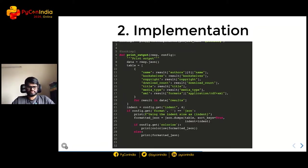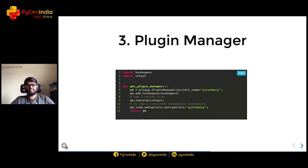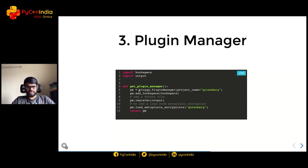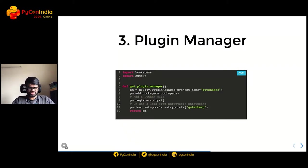Third is the plugin manager. The plugin manager takes care of registering plugins and creating instances for hooks to be called later. To create a plugin manager, first create an instance with the same project name. Then add the hook specification — now Pluggy knows the hook specifications for this project. Then register a hook implementation. In our case output.py lies in the same repository.